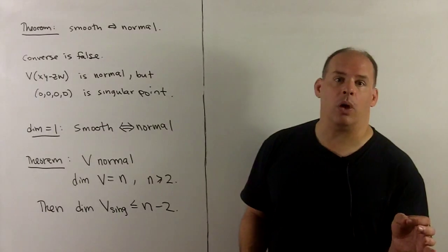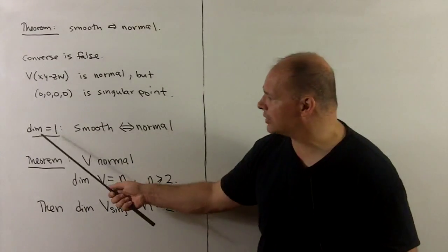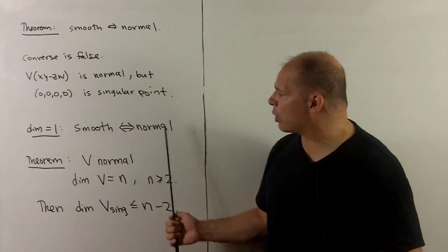If dimension equals 1—we're talking about algebraic curves over the complex numbers—then smooth and normal are equivalent.